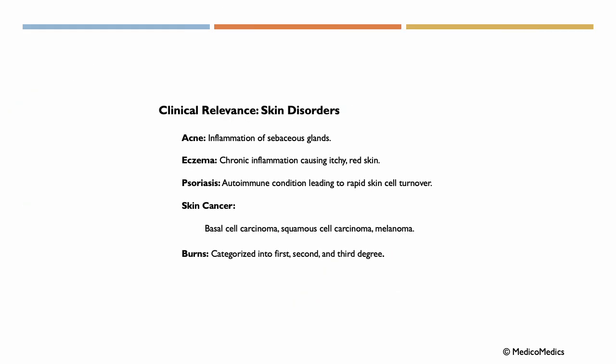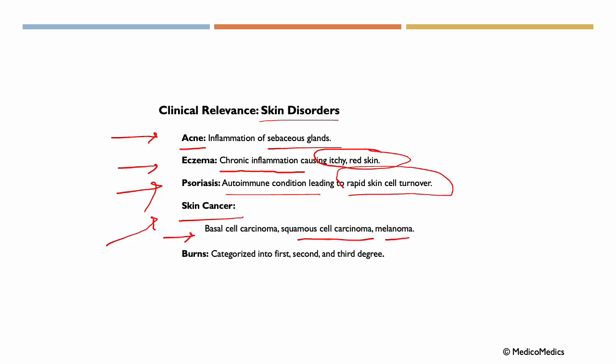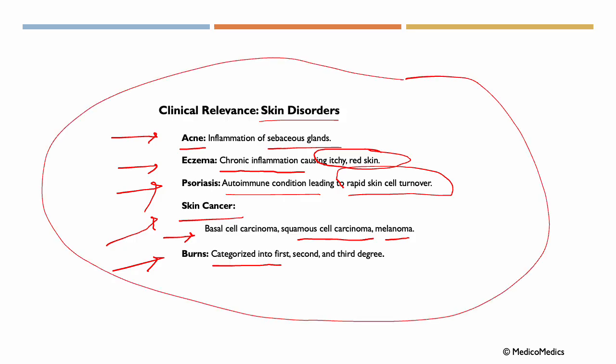Now let's just briefly mention some skin disorders. We have acne, the inflammation of our sebaceous glands. We have eczema, which is a chronic inflammation causing itchy red skin. Psoriasis, an autoimmune condition leading to rapid skin cell turnover. We can have skin cancer, so basal cell carcinoma or squamous cell carcinoma, melanoma. We can have burns, and we categorize burns into first, second, and third degree. Now you can just get an overview here. We have lectures going into detail on each of these.